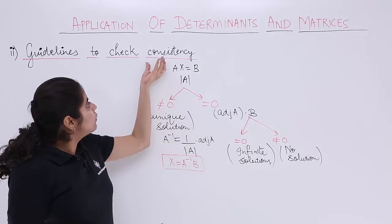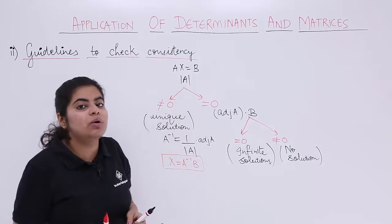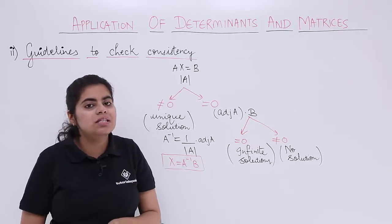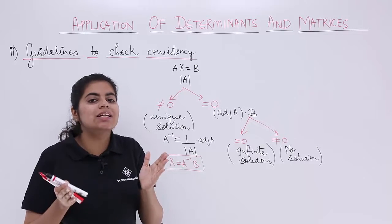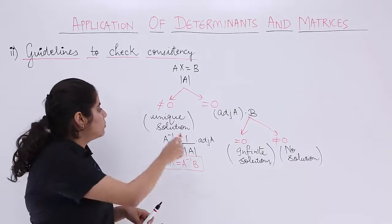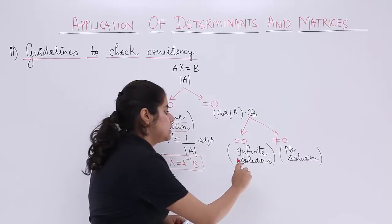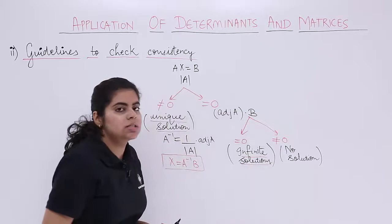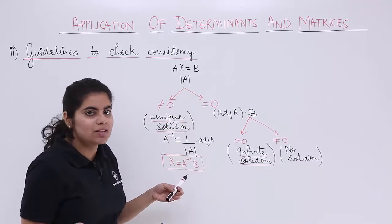Now this video tells about consistency. Consistency means a system of equations is a consistent system if there exist one or more solutions to that. One solution means unique solution. More solution means infinite solutions. And inconsistent means no solution.